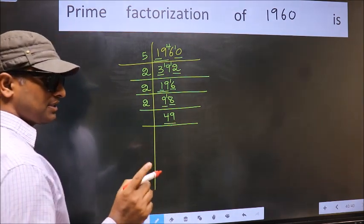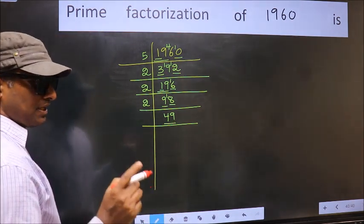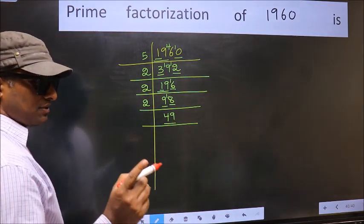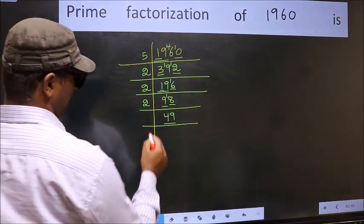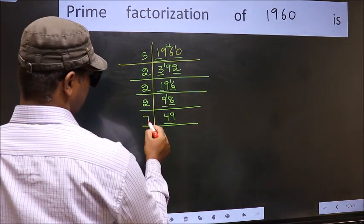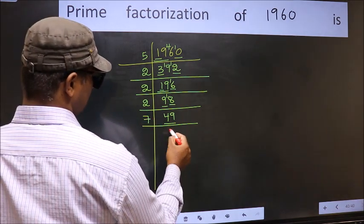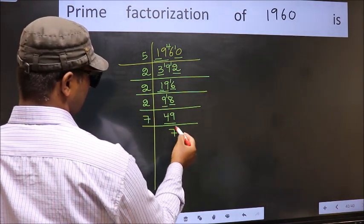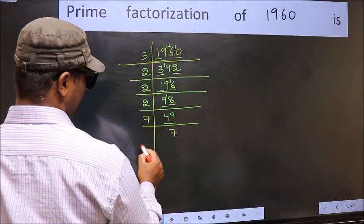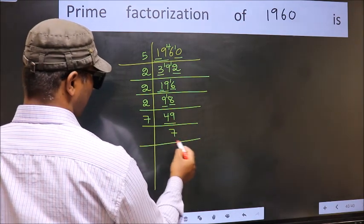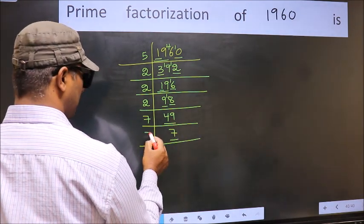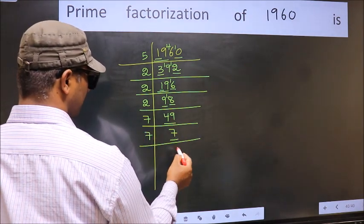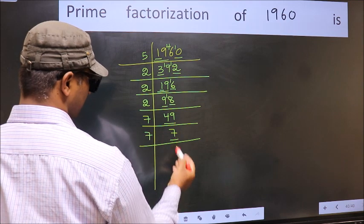Always remember 7 times 7 is 49. That is 7 times 7 is 49. Now we have 7. Since 7 is a prime number, 7 times 1 is 7, so we got 1 here.